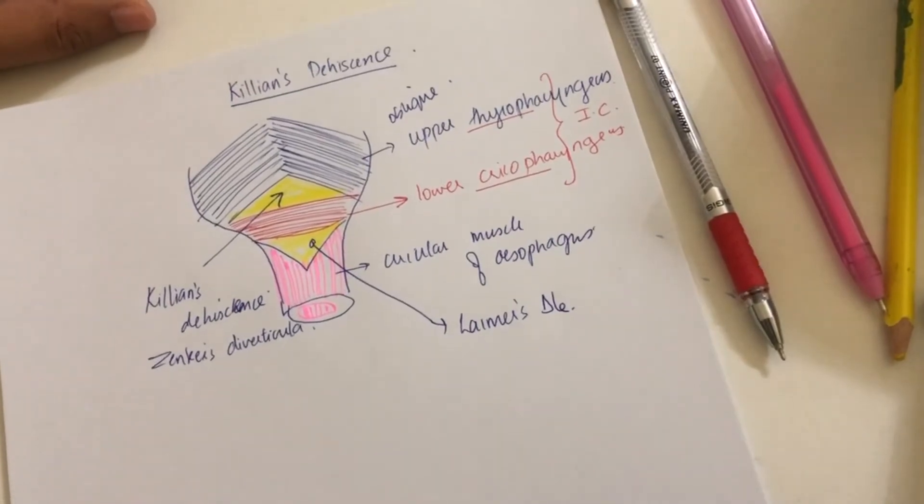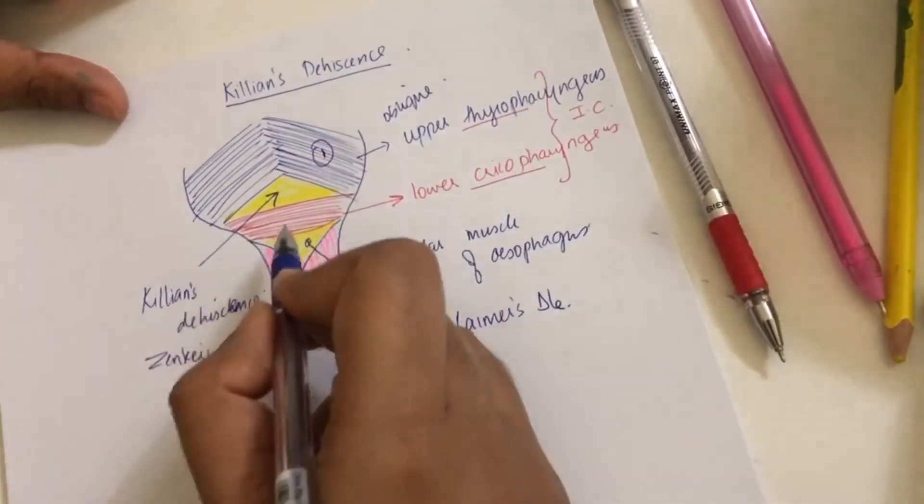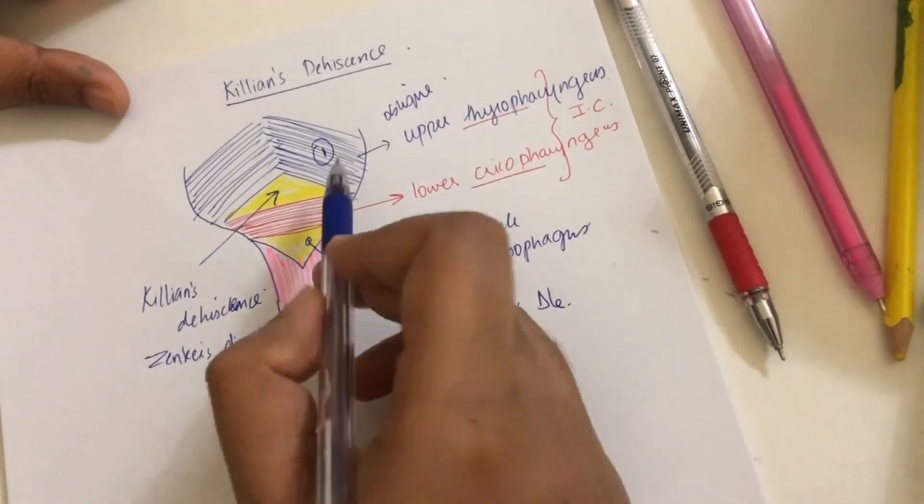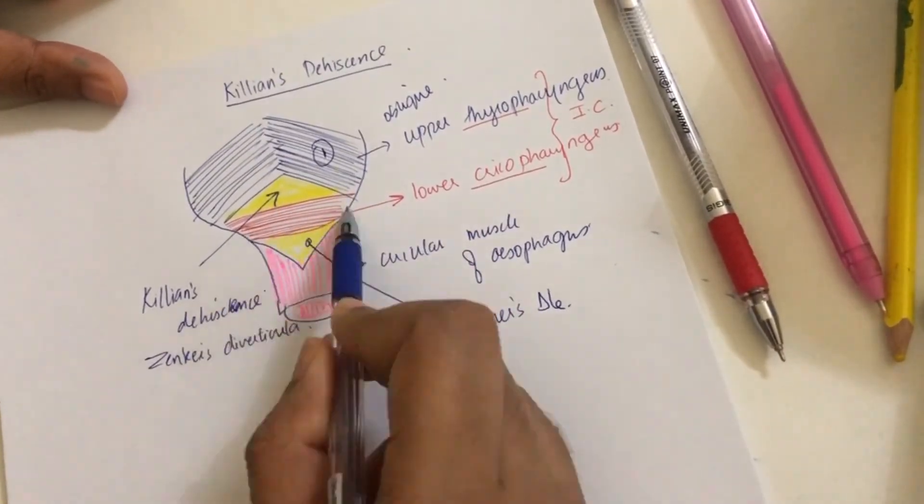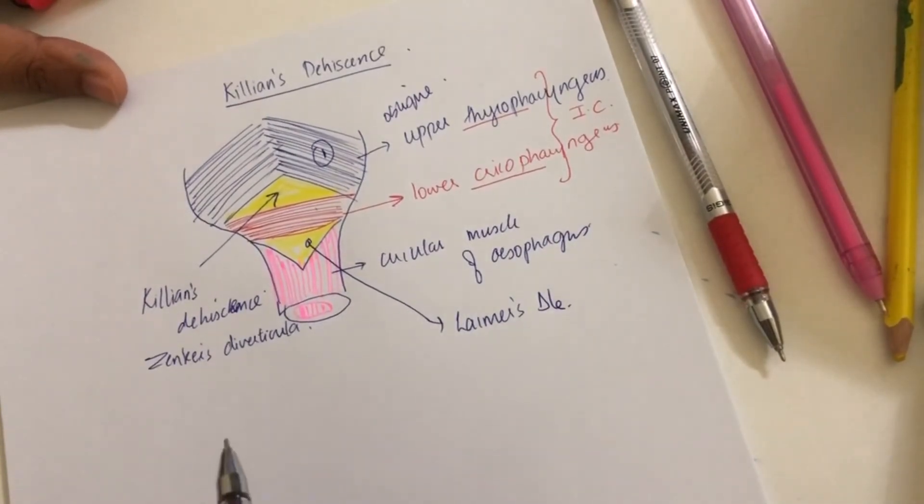To review: first we have the oblique fibers which is called upper thyropharyngeus, transverse fibers lower cricopharyngeus, and the space between them is Killian's dehiscence.